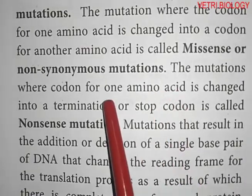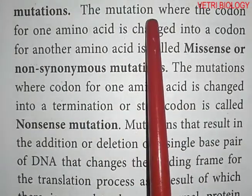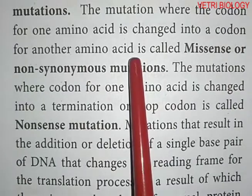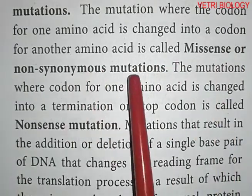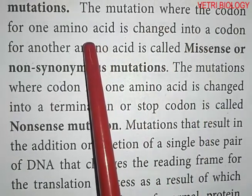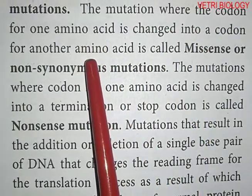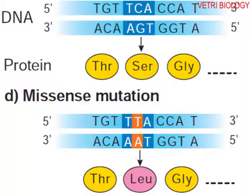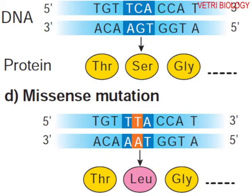Next is missense or non-synonymous mutation. The mutation where the codon for one amino acid is changed into a codon for a different amino acid is called a missense or non-synonymous mutation. In this case, the DNA template strand mutates such that a different codon is produced, resulting in a different amino acid being incorporated into the protein.